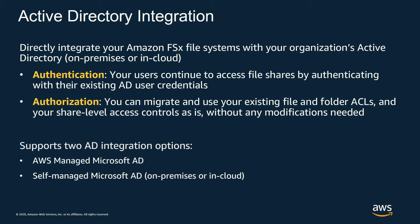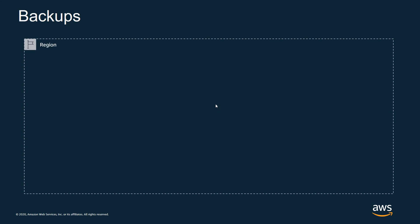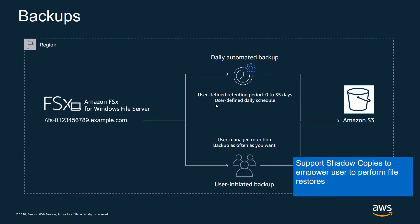There are two integration options: you can use an AWS Managed Microsoft Active Directory option, which I used in the demo, or if you have your own existing Microsoft Active Directory — either on-premises or in the cloud — you can use the Self-Managed Microsoft AD integration option. In terms of backups, we demonstrated automatic daily backups with a retention period from 0 to 35 days, or you can do a user-initiated backup and manage the retention yourself. FSx also supports Windows shadow copies, which allows users to perform their own file-level restores on the FSx file system.